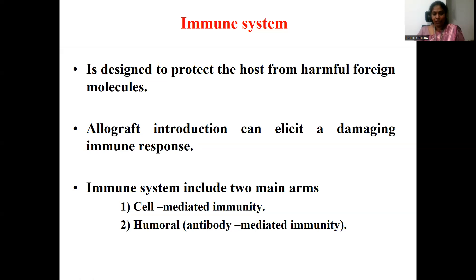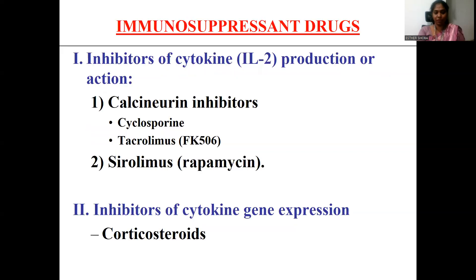Whenever the body recognizes a molecule as a foreign particle, it triggers the immune response in two different ways: one is cell-mediated immunity and the other is humoral-mediated immunity. We are going to discuss the different classes of immunosuppressant drugs, starting with the first important type — calcineurin inhibitors, which includes the brand drug cyclosporine.